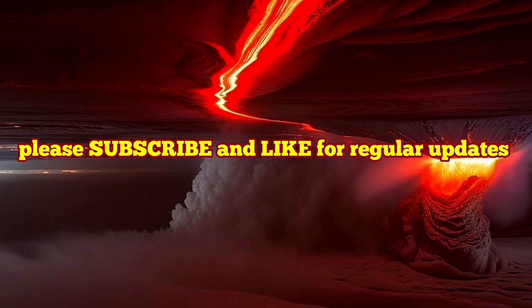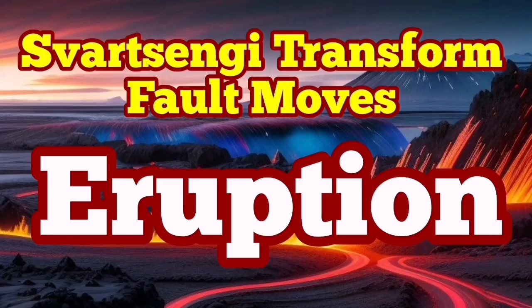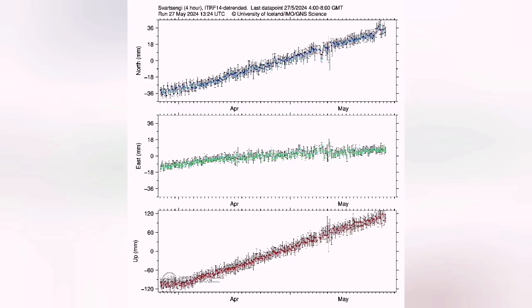I have a video about the importance of these transform faults. Watch this. Our GPS data shows now that we have around 20 million cubic meters of magma under the Svartseng volcanic system accumulated. This is based on this chart on the lower part, that one. But the north-south one also shows something strange.